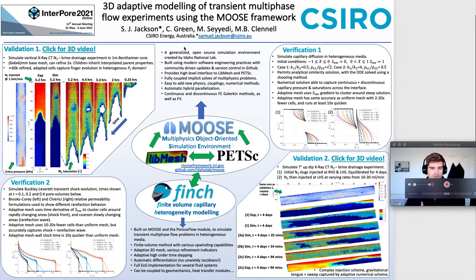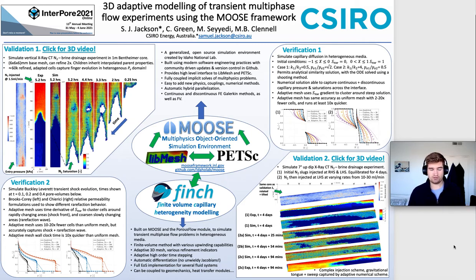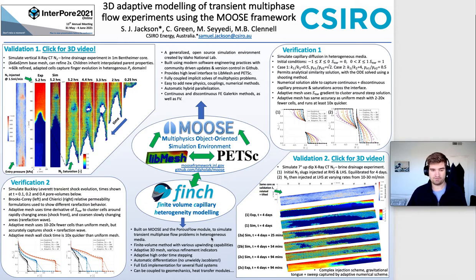The idea behind the project was to build an open-source simulation environment to simulate transient multi-phase flow problems in heterogeneous media. At CSIRO in particular, Chris Green and Andy Wilkins have been doing a lot of work with the MOOSE simulation environment, as well as developing the porous flow module as part of that.